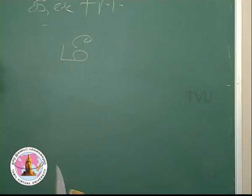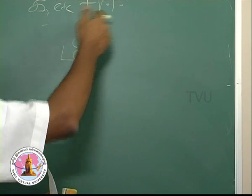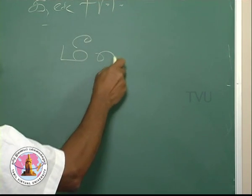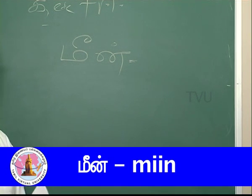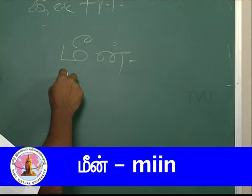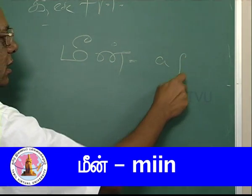What is this? M plus ee, mee. And this is the consonant n. Mee, n, meen. Meen means a fish.